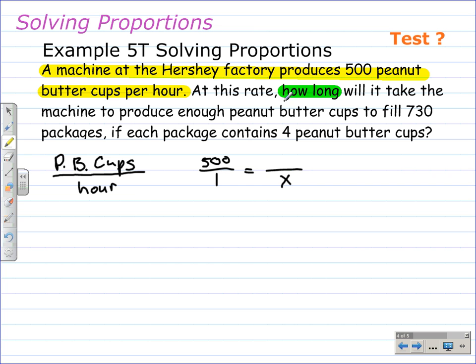However, x is what we need to find, how long it's going to take to fill 730 packages if each package contains four peanut butter cups. That's what's going to go up here. We need to take these two numbers, 730 and four, and we need to multiply them. Four times zero is zero, four times three is 12, carry the one. Four times seven is 28, plus the one we carried would be 29. So we know we need 2,920 peanut butter cups.